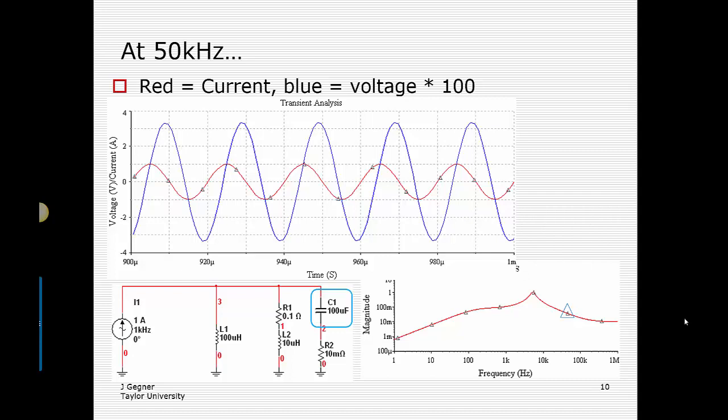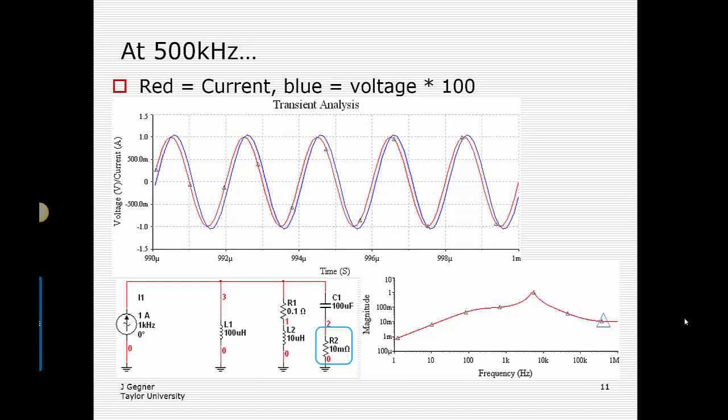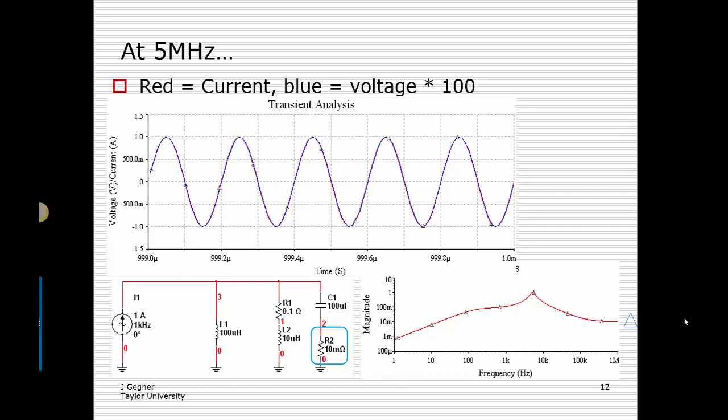Moving to higher frequency, we're on the back side where impedance falls due to C1. For a capacitor, voltage lags the current because you must integrate current over time to deposit charge and build voltage. The blue voltage lags the current by about 90 degrees. Approaching and entering the flat region, R2 takes over and the current and voltage approach being in phase. At 5 MHz, phase has returned to 0 degrees — voltage and current exactly overlap — and the magnitude difference is a factor of 100: 1 amp times 10 milliohms equals 10 millivolts.